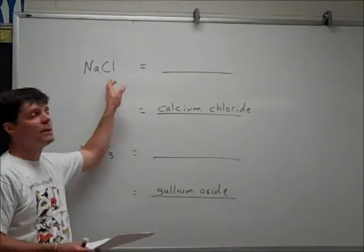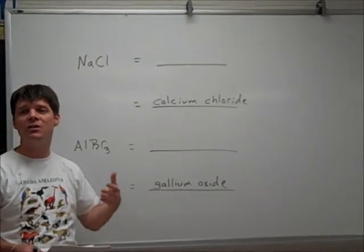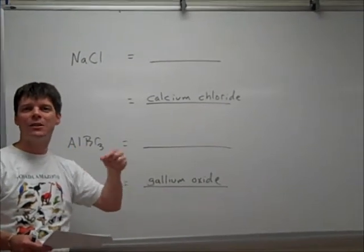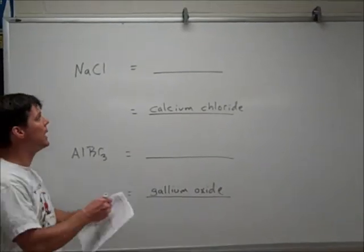Now, when we have non-metallic elements, they are going to form negatively charged ions, and we change the name ending from chlorine to chloride. So the name of this compound is going to be sodium chloride.